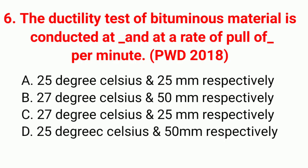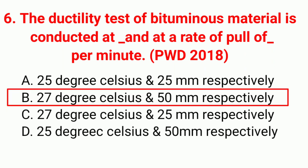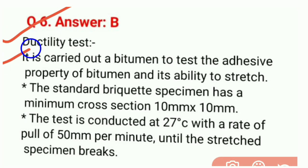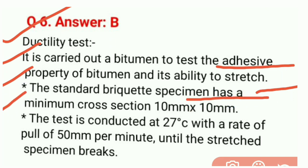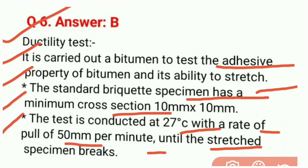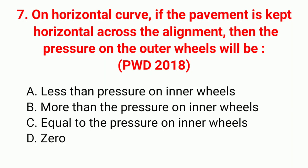Question 6: The ductility test of bituminous material is conducted at what temperature and at a rate of pull of how much per minute? This was asked in PWD 2018 exam. Correct answer option B: 27°C and 50 mm respectively. The standard briquette specimen has a minimum cross-section of 10 mm × 10 mm. The test is conducted at 27°C with a rate of pull of 50 mm per minute until the specimen breaks.